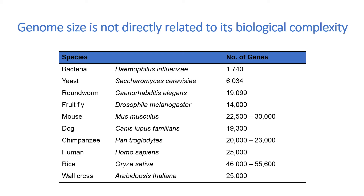One of the biggest surprises in the human genome is the revelation that humans only have around 25,000 genes, rather than the previously estimated 100,000 genes. The nematode worm C. elegans, with approximately 18,000 genes, has half as much genetic information as humans. The mouse has essentially the same number of genes as humans, indicating that genome size is not directly related to biological complexity. Another surprise is that only a third of the genome codes for protein; the other two-thirds are DNA whose function we have yet to find out.